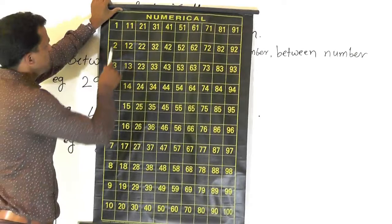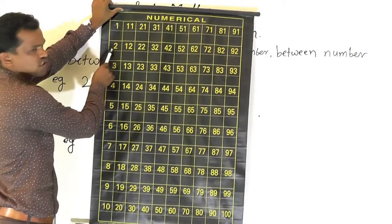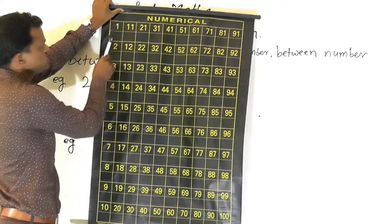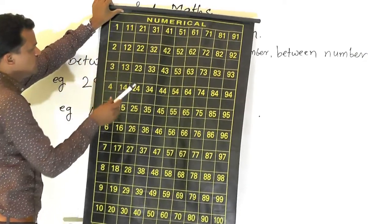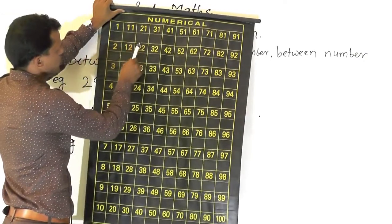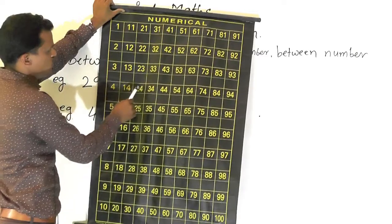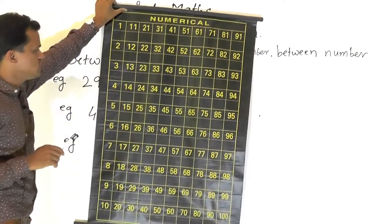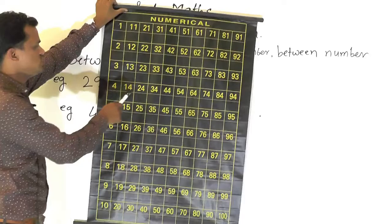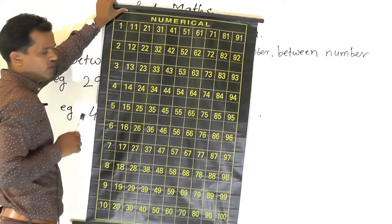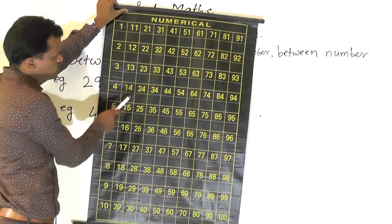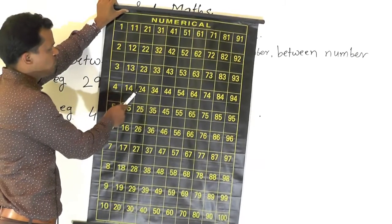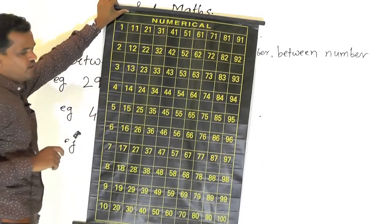We will see here. After number of 81 is 82. Now here see: 21, 22, 23, 24. Suppose the given number is 24, and the question is which is the after number of 24. After 24, which number is given here? 25. So the after number of 24 is 25.